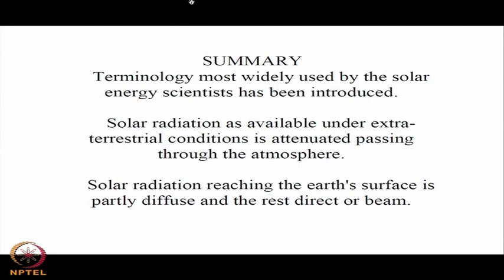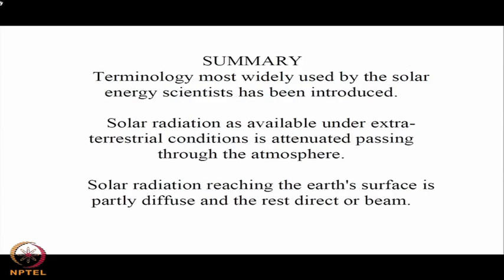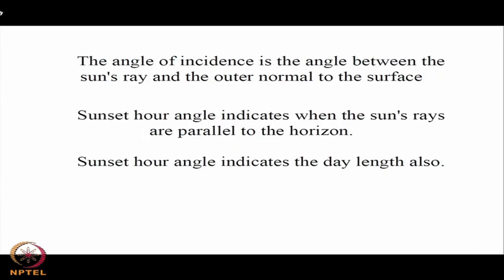In summary, terminology most widely used by solar energy scientists has been introduced. Solar radiation as available under extraterrestrial conditions is attenuated passing through the atmosphere. Solar radiation reaching the Earth's surface is partly diffuse and the rest is direct or beam. The various angles necessary to describe sun-Earth-surface relative positions have been defined: latitude and longitude specify location; declination indicates the day; hour angle indicates the time of day; angle of incidence is between the sun's ray and the outer normal to the surface; and the sunset hour angle also gives the total number of sunshine hours.